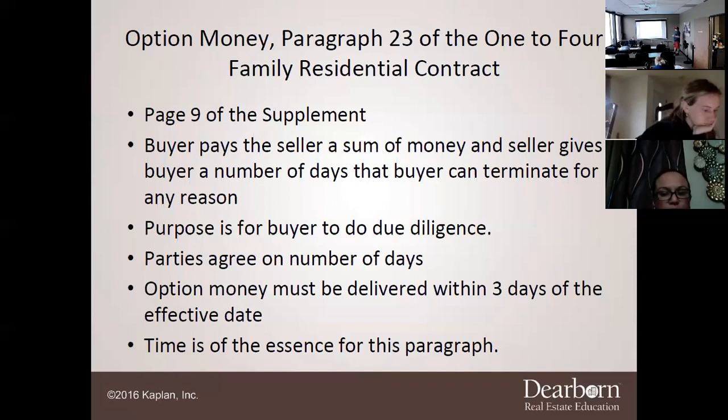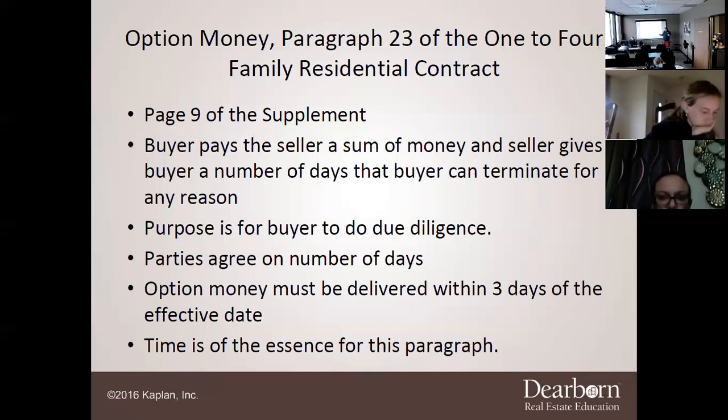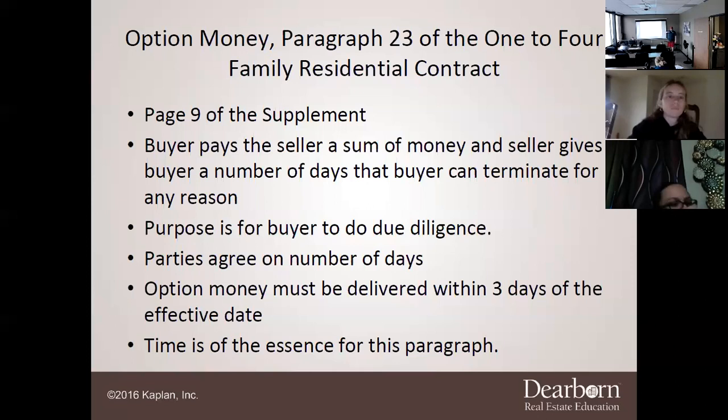Option money: the buyer pays the seller a sum of money, and the seller gives the buyer a number of days that the buyer can terminate for any reason. That is any reason — not just if the inspection goes bad. They can back out for any reason as long as it's within their option period. Until April 1st, option money was always paid to the seller — the buyer would give a cashier's check signed to the seller.